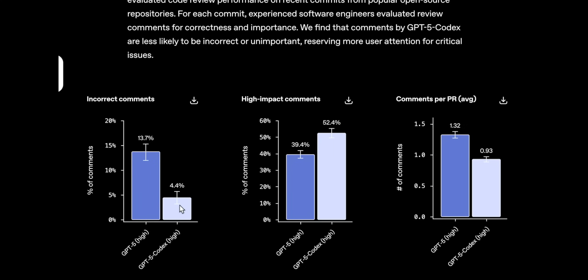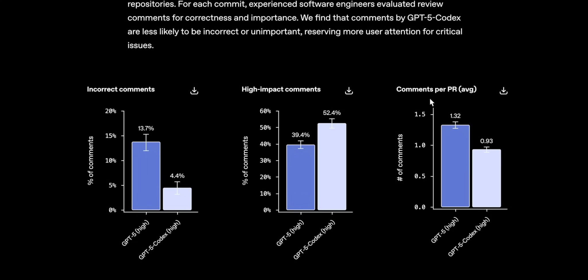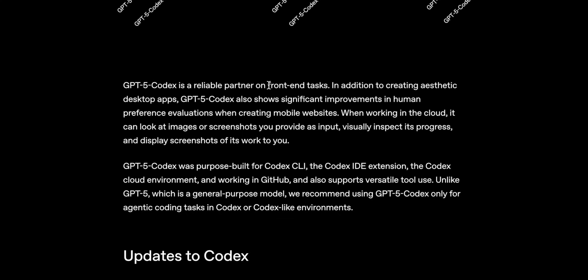Looking at important code changes, in incorrect comments we see a substantial improvement — the model makes important edits instead of unnecessary ones. In high-impact comments there's improvement again, and improvement in comments per PR on average. Not only agentic coding but in front-end tasks and aesthetic designs, this model seems better than GPT-5 High.